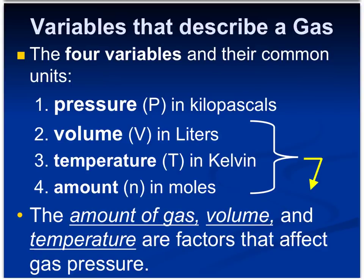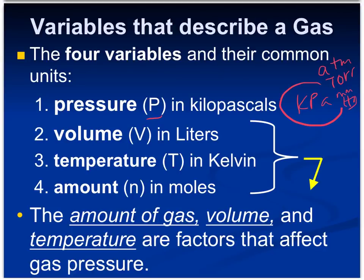This is a super important slide because it ties into the next video we're going to watch — variables that describe a gas. The four variables that can affect gas pressure are pressure itself, volume, temperature, and the amount of gas. Pressure is abbreviated P and measured in kilopascals (kPa), which is the SI unit. Other units include atmospheres, torrs, and millimeters of mercury. Volume is measured in liters, temperature in Kelvin — so if you have a Celsius temperature you'll need to convert it — and the amount of gas is measured in moles.